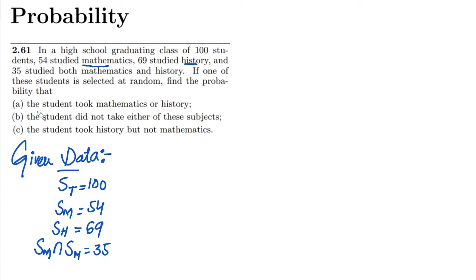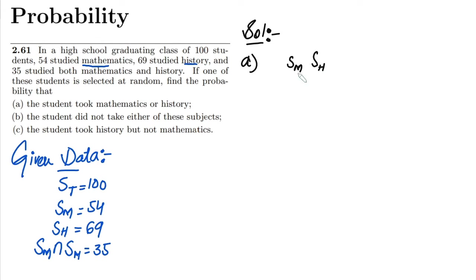For part A, I have to find the probability that the student took mathematics or history. I'll write this as P(Sm or Sh). As I've mentioned in previous videos, wherever 'or' comes I have to use the union, so it will be P(Sm ∪ Sh).